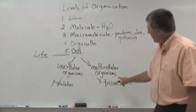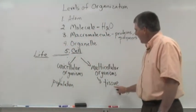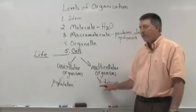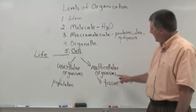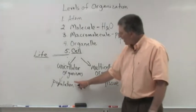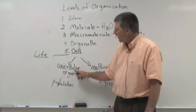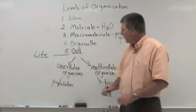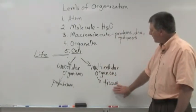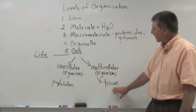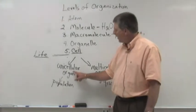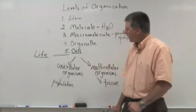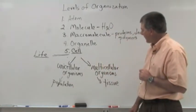A tissue is defined as two or more cells working together to perform a particular function. We don't have tissues at the unicellular level because each individual cell is its own living entity. So multicellular organisms go on to the tissue level of organization. Unicellular organisms go to the population level. We'll come back and talk about what a population is in just a few minutes.